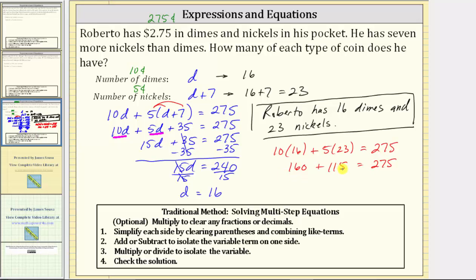160 plus 115 equals 275. 275 equals 275, verifying our solution is correct.